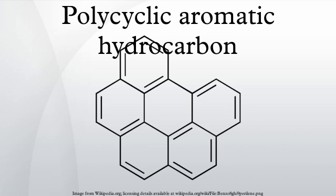Three resonance structures with two sextets each are present in chrysene. Superposition of these structures reveals that aromaticity in the outer rings is greater compared to the inner rings. Another example is coronene, illustrated in the form with the most sextets, where four of the rings are highly aromatic while the others are less so and therefore more reactive.